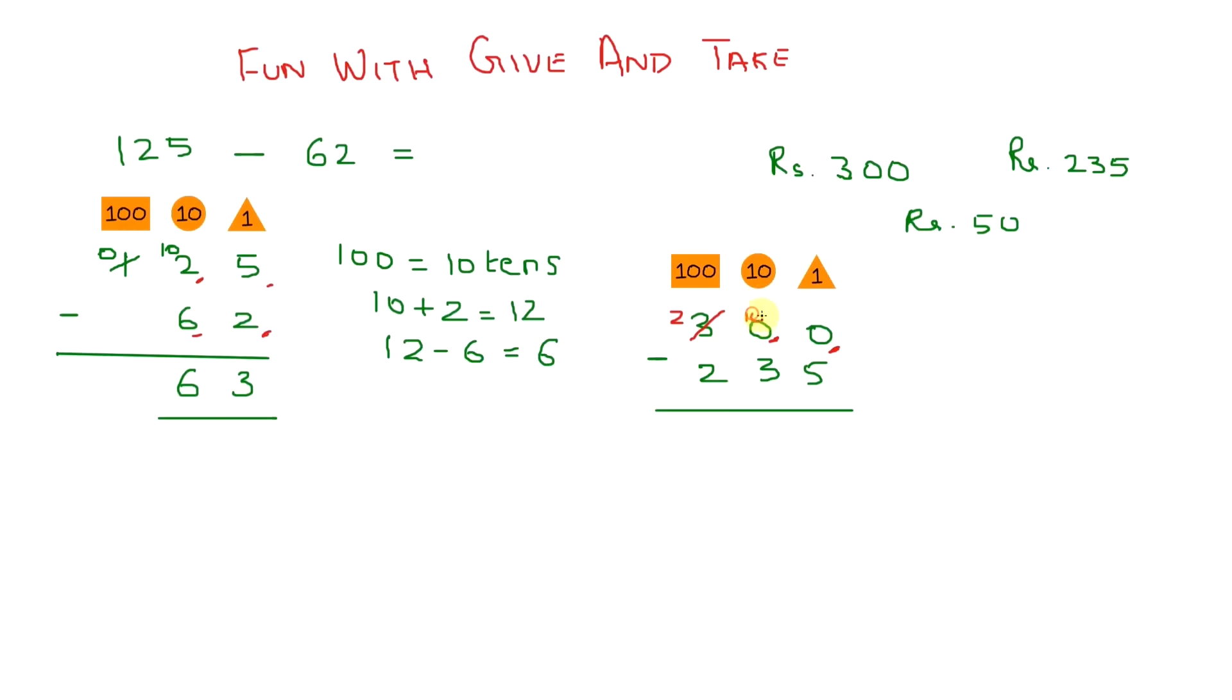So now we can borrow one ten and write it in the ones column. When we borrow one ten from the ten tens, we'll be left with nine tens. So in the ones column we now have 10 minus 5 equals 5. In the tens column we have 9 minus 3 equals 6. And in the hundreds we have 2 minus 2 equals 0.